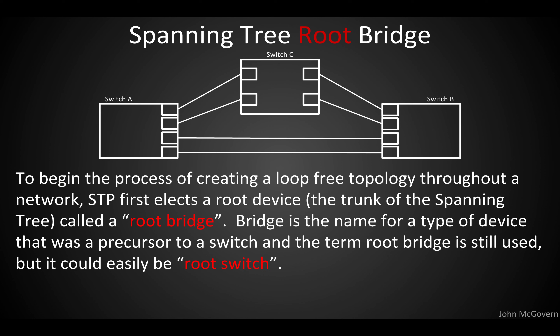Let's talk about how spanning tree creates this loop-free topology and what its algorithm looks like. To begin, spanning tree first elects what they call a root device. I like to think of this as the trunk of the spanning tree. In spanning tree terminology this is called the root bridge — 'bridge' being an old-school term for a precursor to a switch, essentially a two-port switch. You could easily call it the root switch, but 'root bridge' is the standard spanning tree term.